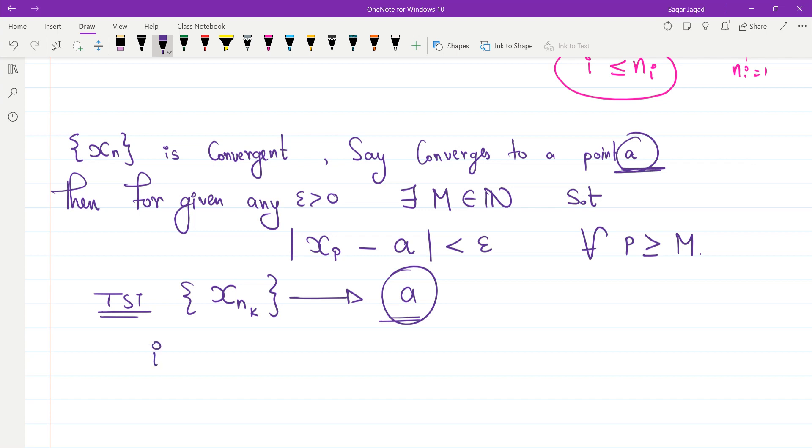Now what we know is we know that i is less than or equal to ni. Therefore, my p would be less than or equal to np, and this p we know is greater than or equal to M.